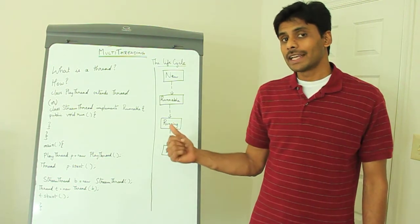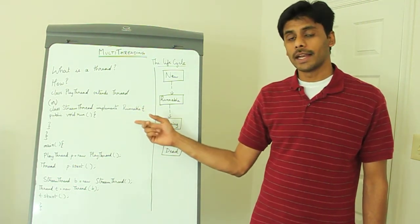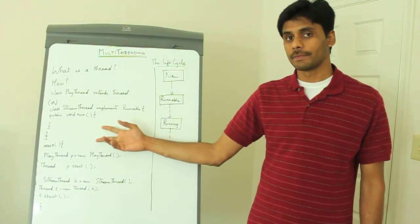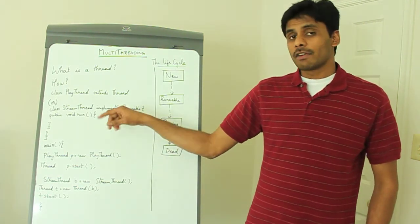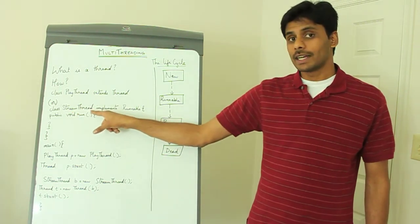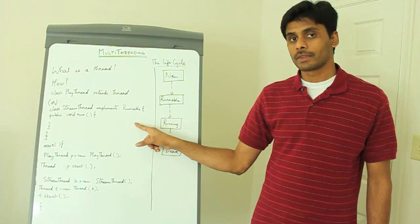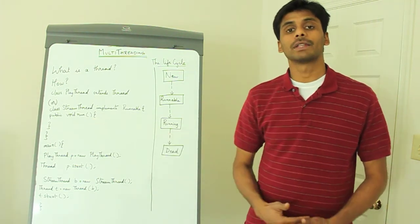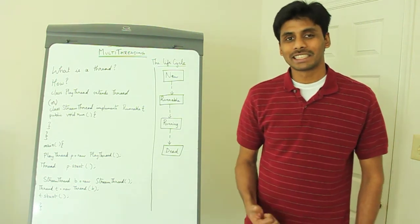The second way of creating a thread in Java is to implement the Runnable interface and then override the run method. In our YouTube example, we will create a stream thread that implements the Runnable interface and override the run method, which will have the logic to stream the video from the YouTube database.